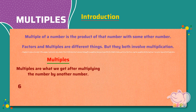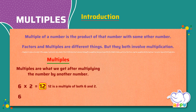6 times 2 equals 12. So 12 is a multiple of both 6 and 2. 6 times 3 equals 18. So 18 is a multiple of both 6 and 3.